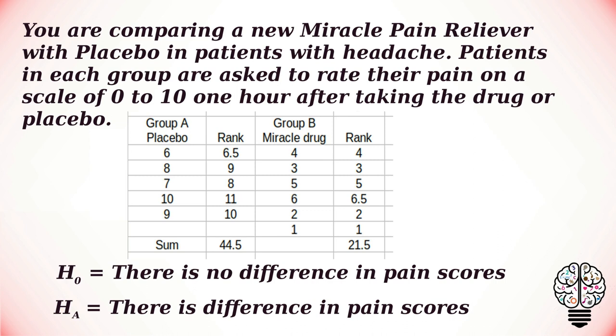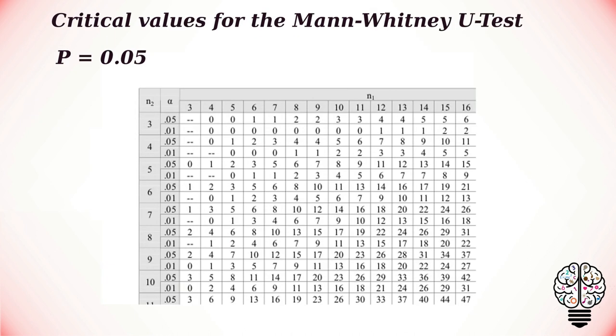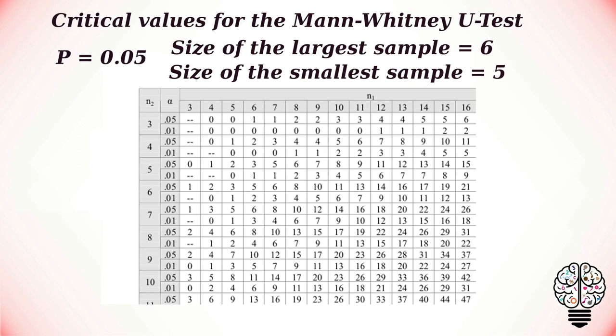We usually take our alpha value as 0.05, and degrees of freedom is not applicable in the case of Mann-Whitney U test. To calculate our critical U value, we have to take the size of the largest group and the size of our other group and equate it. In our case it's 6 and 5, and we get our critical value as 3.